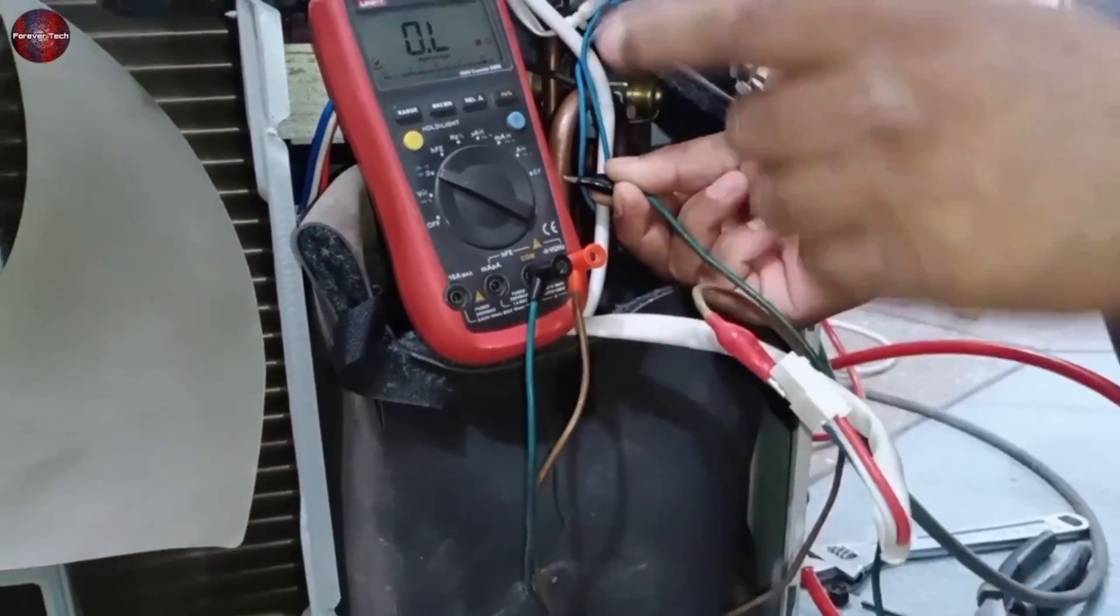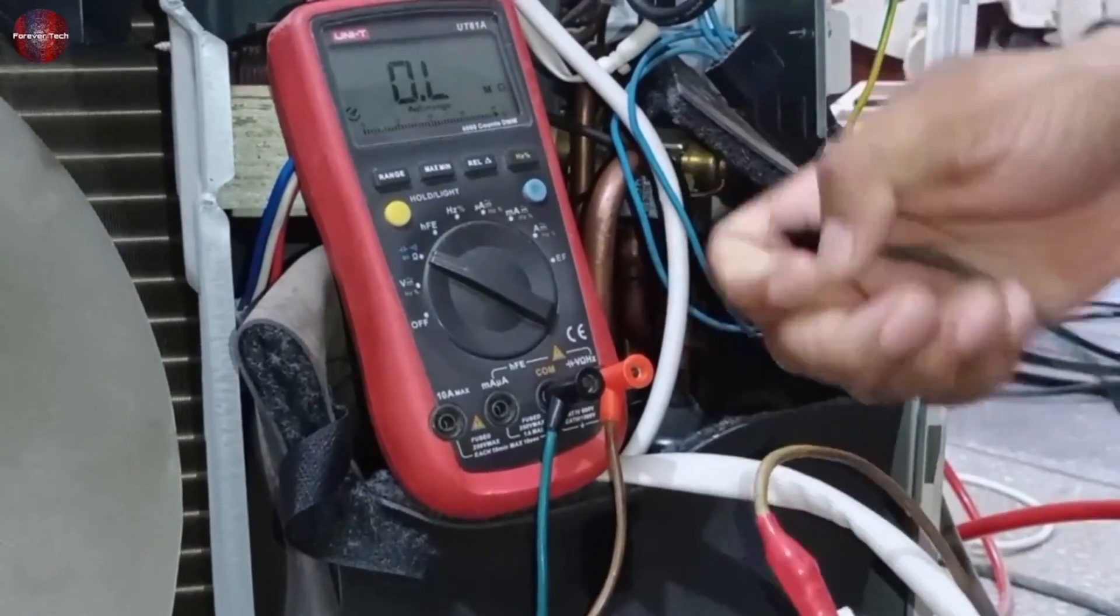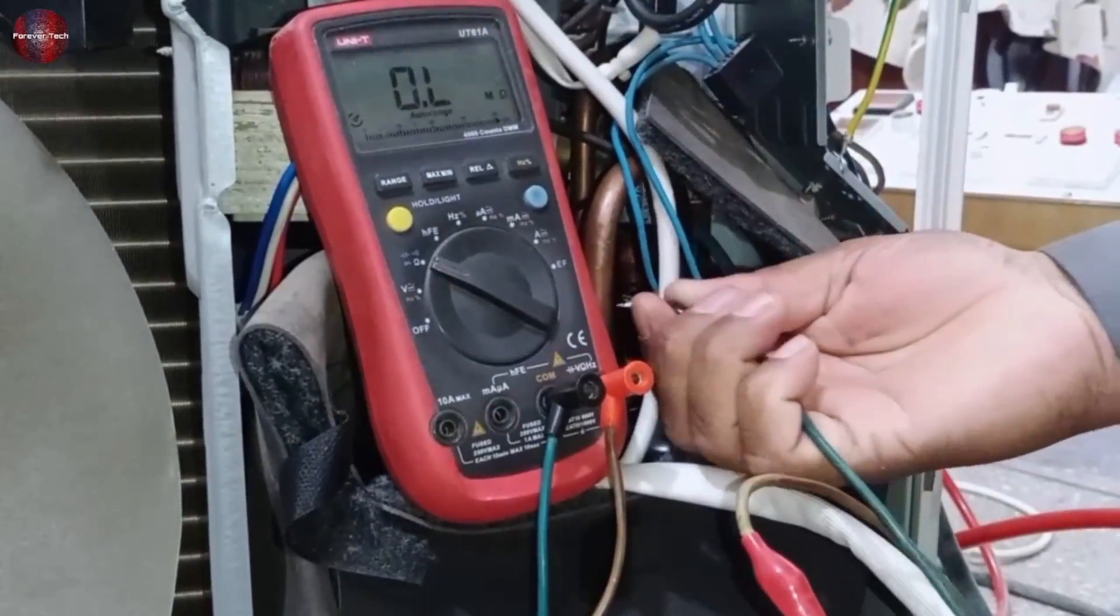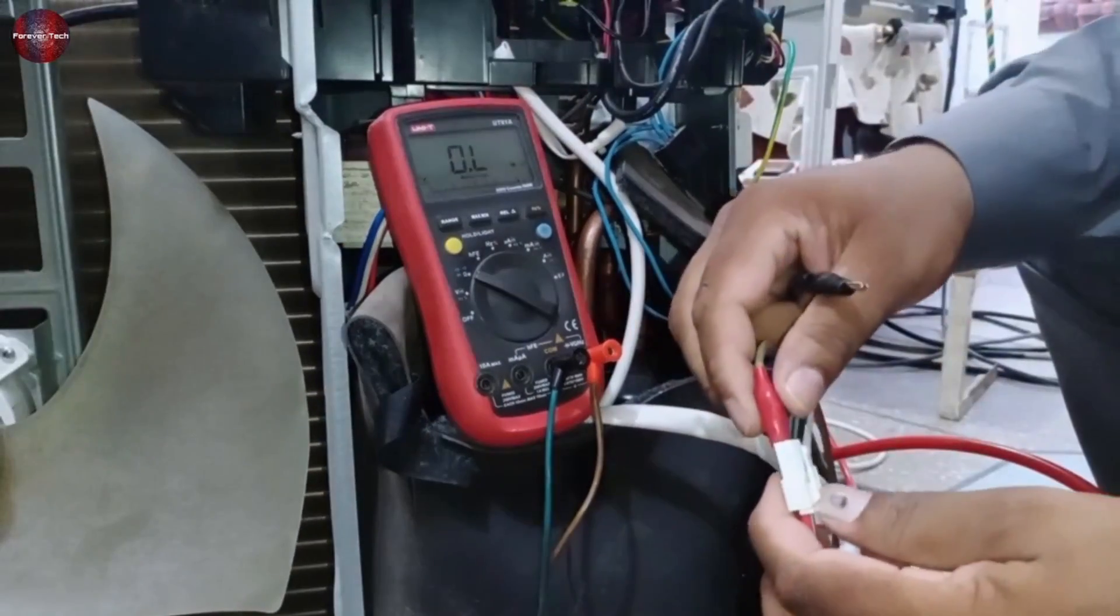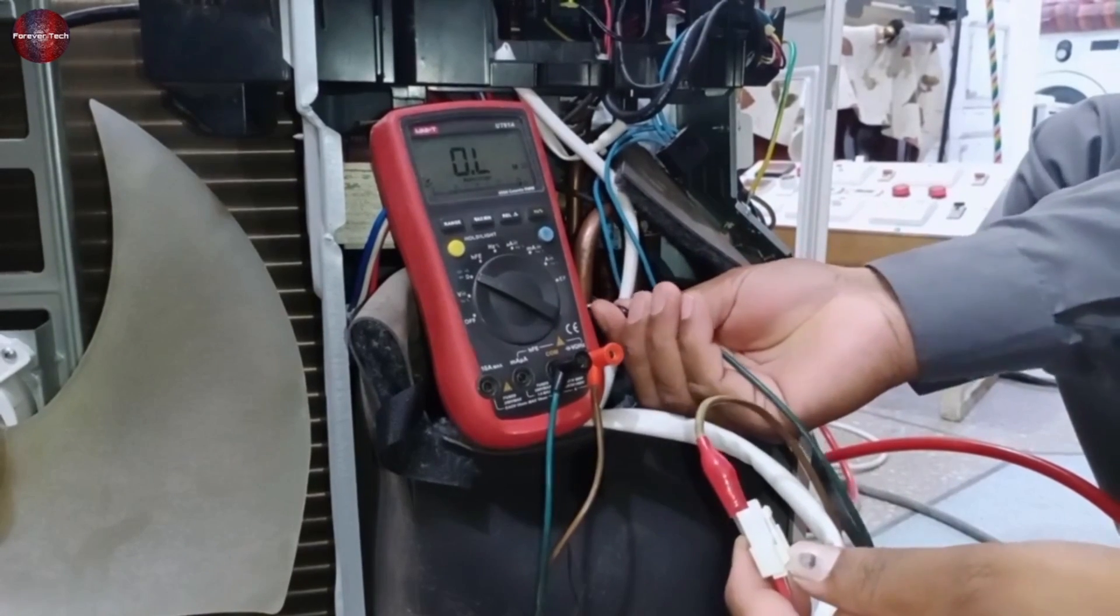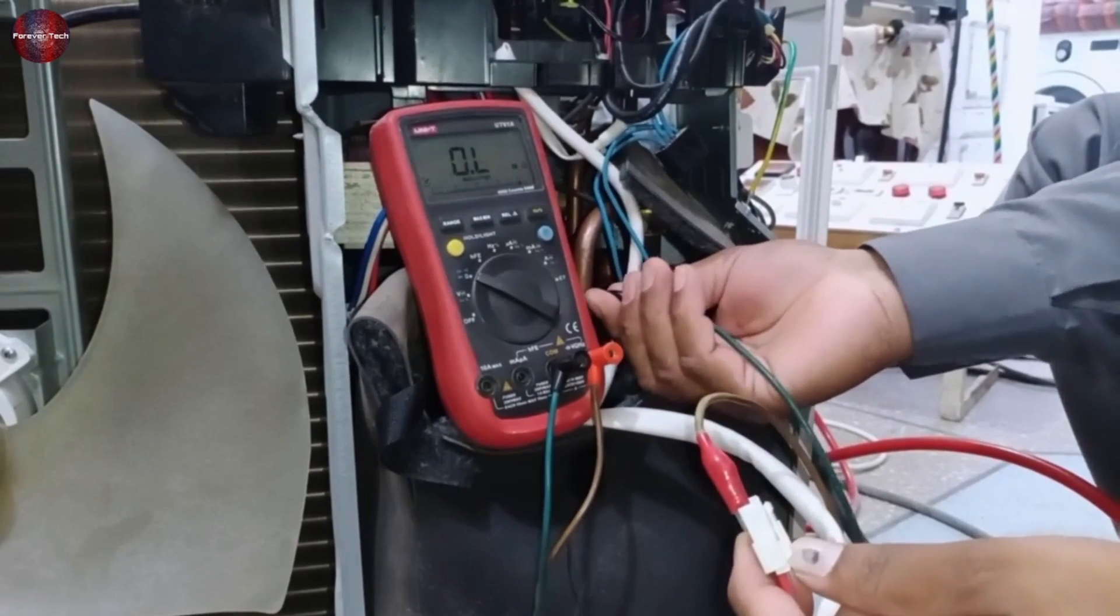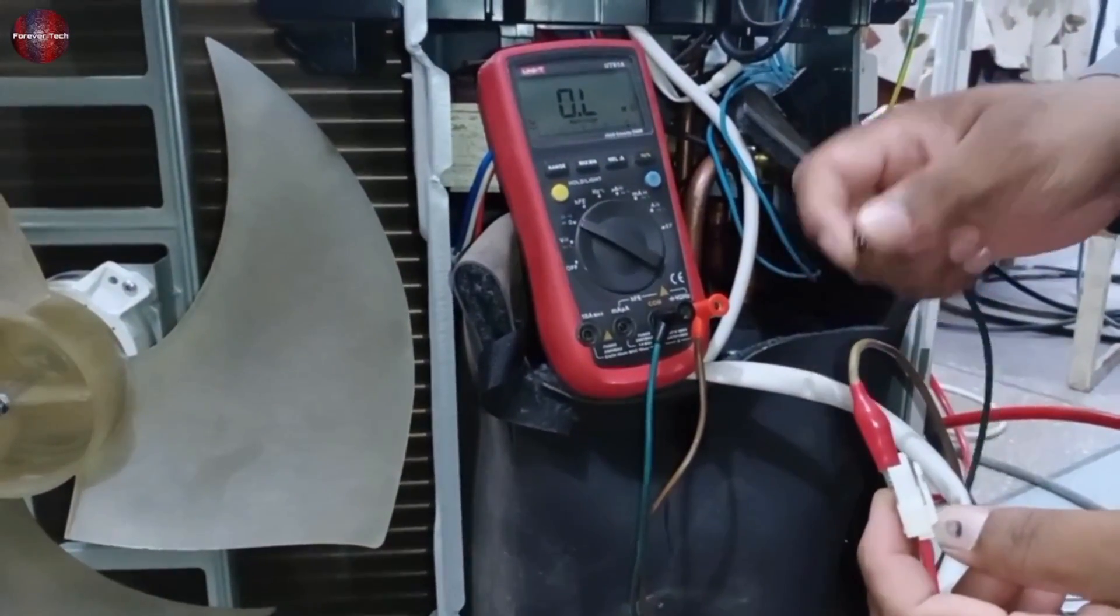See, the multimeter is showing no reading. Same, attach the red probe of the multimeter with the next terminal of the compressor and check the compressor leakage. It also has no reading. In the same way, I checked the third terminal as well. It means that the winding of the compressor is fine and has no leakage or body short inside the compressor.